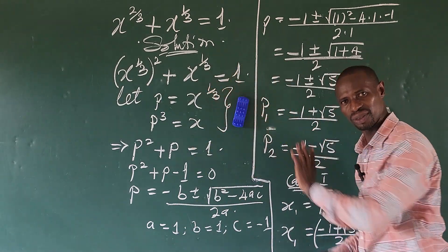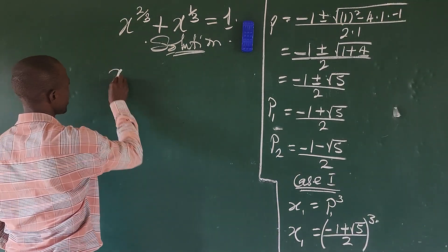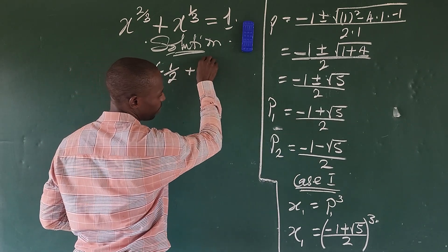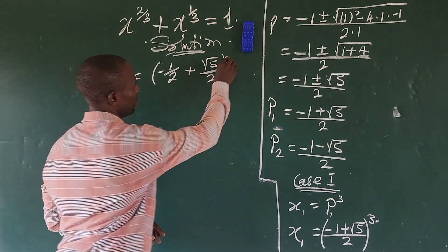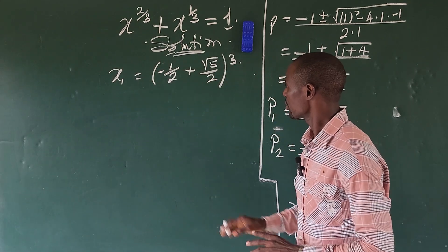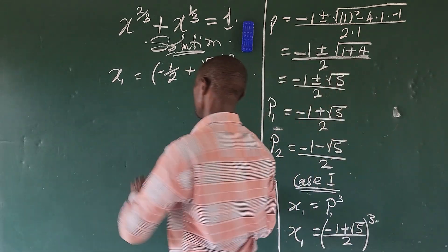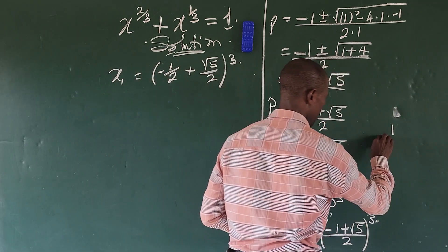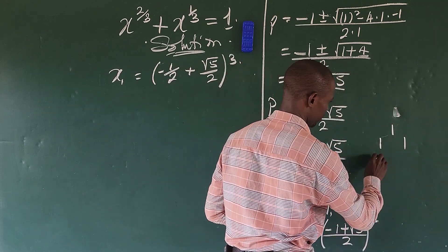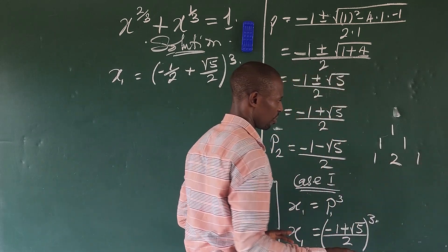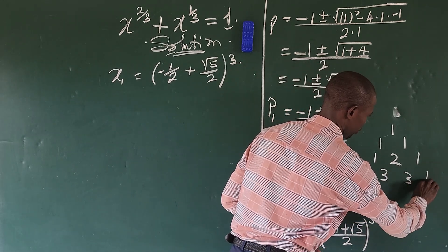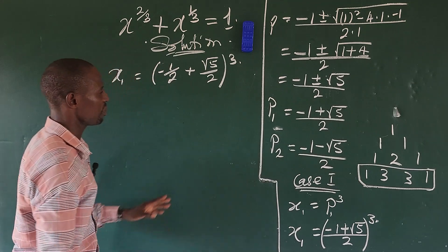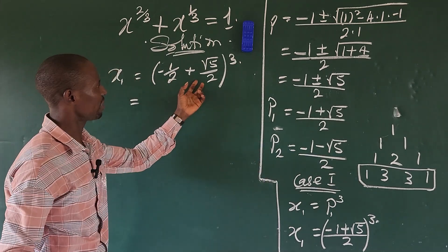We rewrite this as the bracket negative one over two plus square root of five over two, all to the power of three. To expand this, we use the binomial expansion with Pascal's triangle. For the power of three, the coefficients are one, three, three, one.